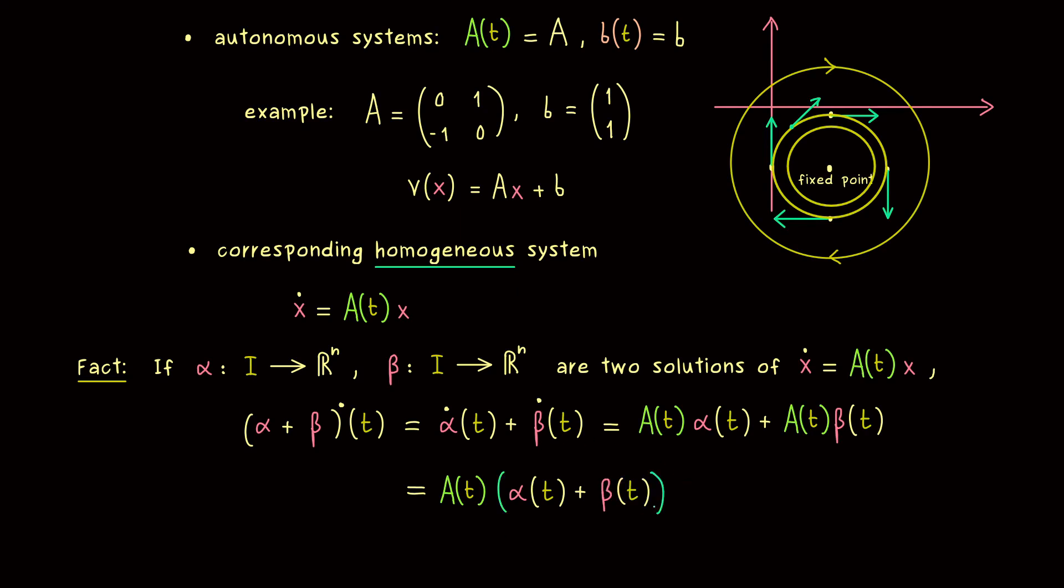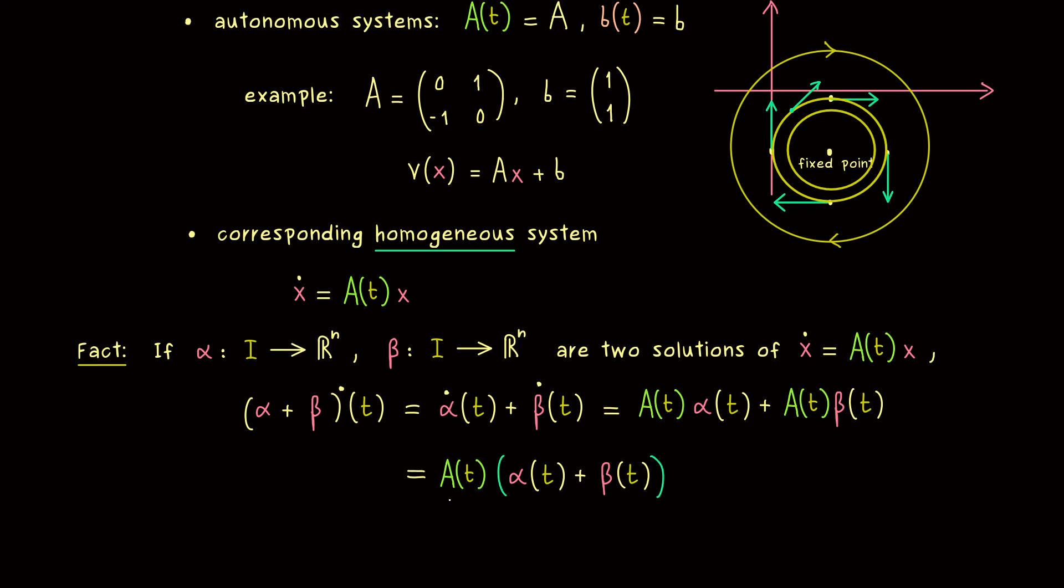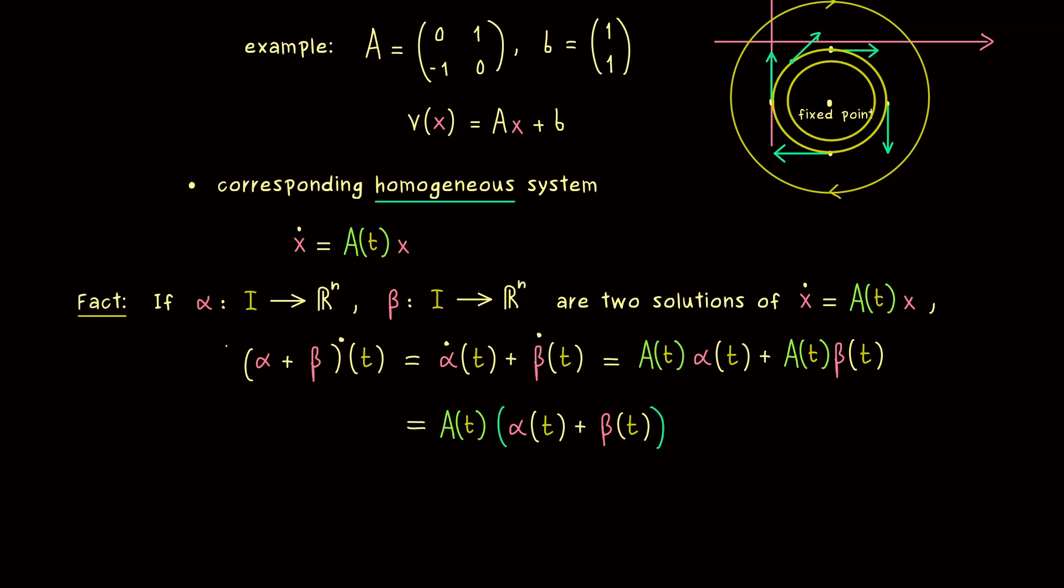So we simply get the matrix vector multiplication for alpha and beta here. And for the general matrix product, we also have a linear property, namely the distributive rule. So this is really natural, we can just write A(t) times alpha(t) plus beta(t). And that's it. There we see, we also have a solution given by alpha plus beta. And now you can believe me, that we can do the same calculation with a scalar lambda. So scaling a solution also gives us a solution again. So in general, every linear combination of solutions is a solution again. So this is definitely an important fact you should remember for the homogeneous system. But please don't forget, it's only valid for the linear homogeneous system here. You cannot just generalize it to any ODE.